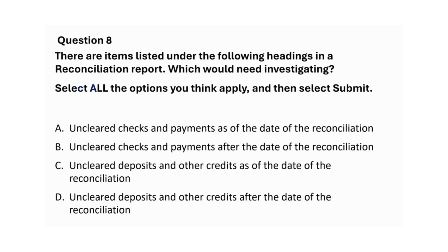There are items listed under the following headings in a reconciliation report — which would need investigating? Select all the options you think apply. A: Uncleared checks and payments as of the date of the reconciliation. B: Uncleared checks and payments after the date of the reconciliation. C: Uncleared deposits and other credits as of the date of the reconciliation. The correct answers are A and C: uncleared checks and payments as of the date of the reconciliation, and uncleared deposits and other credits as of the date of the reconciliation.